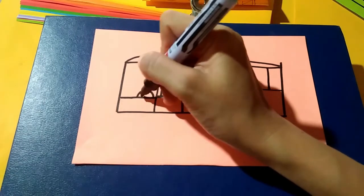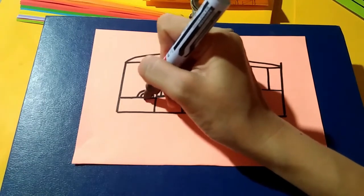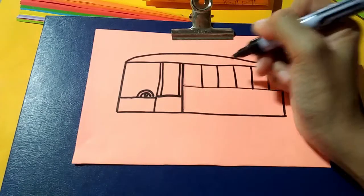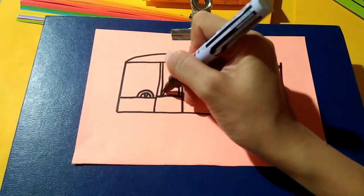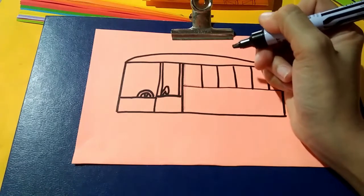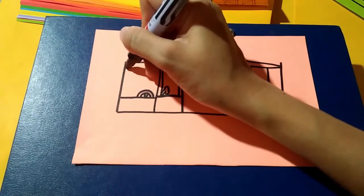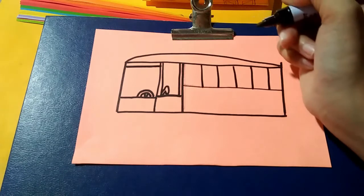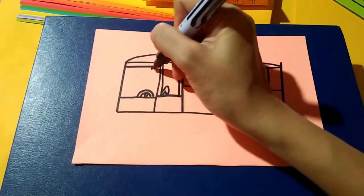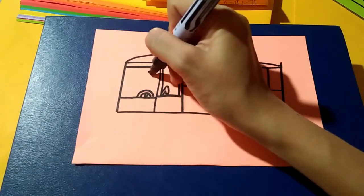Draw the steering wheel. Short lines and an oblong. A line on top. Short lines and oblong.